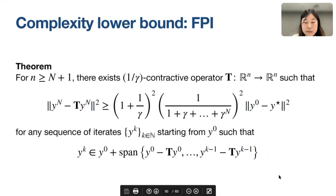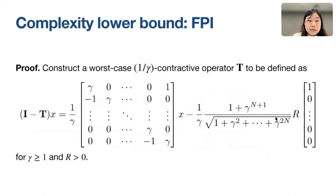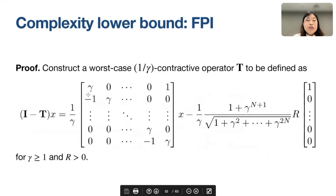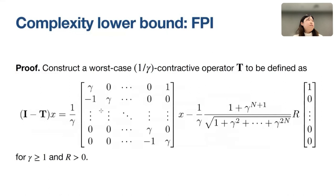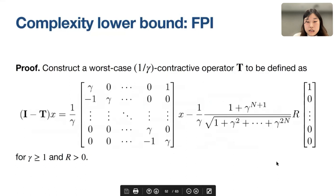For the case γ = 1 (non-expansive operator), this lower bound on the squared fixed point residual matches the convergence rate of OC-Halpern with γ = 1. The worst-case operator is constructed such that starting from x0 = 0, the non-zero entries of the iterates expand entry by entry, and using these characteristics we prove the lower bound as stated in the theorem.